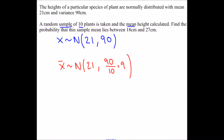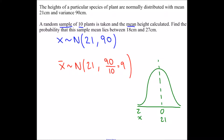Now it's just a normal distribution question. I draw the curve, marking z-values for the standardized distribution and x-values for the unstandardized. The mean of the standardized distribution is 0, and the mean of the unstandardized distribution is 21. We're asked for the probability that the sample mean is between 18 and 27. We need to find the z-values corresponding to 18 and 27.